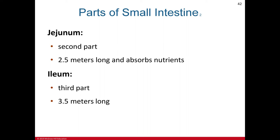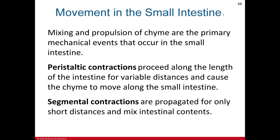The second part of the small intestine is the jejunum, which is 2.5 meters long and absorbs nutrients. The third part is the ileum, which is 3.5 meters long. In the ileum, particularly visible under a microscope, are clusters of lymphatic nodules found throughout the digestive tract but most commonly seen in the ileum — these are called Peyer's patches.